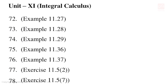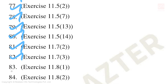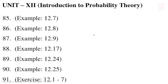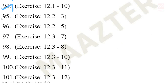Unit 11 three-mark questions: Examples 11.27, 11.28, 11.29, 11.36, 11.37. Exercise 11.5 second sum, seventh sum, sum number 13, 14. Exercise 11.7 second and third sum. Exercise 11.8 first and second sum. Unit 12: Examples 12.7, 12.8, 12.9, 12.17, 12.24, 12.25. Exercise 12.1 seventh, eighth, ninth, tenth sum. Exercise 12.2 third, fifth, seventh, eighth, sum number 10, 11, and 12.